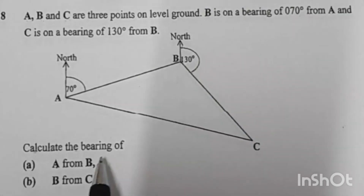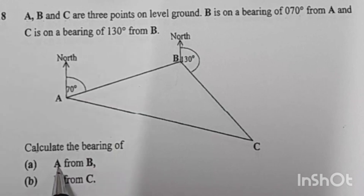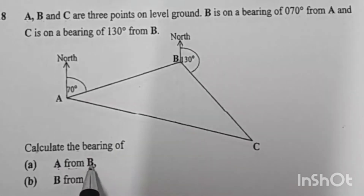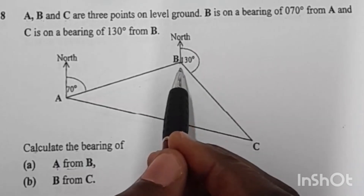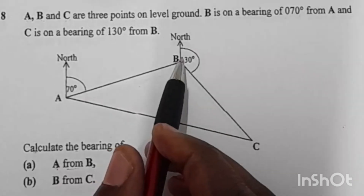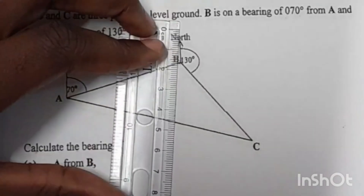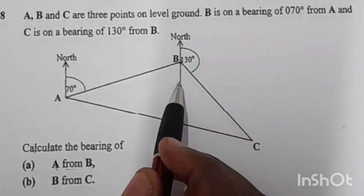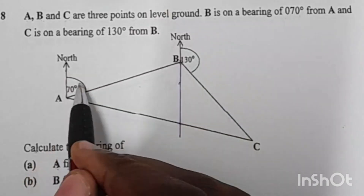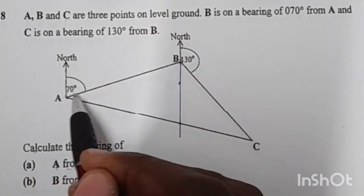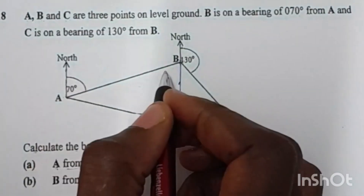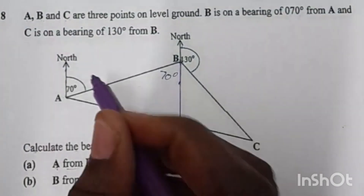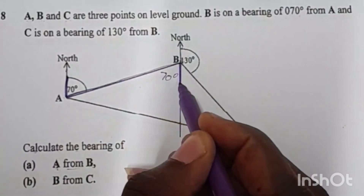Coming back to our question, they want us to find the bearing of A from B, meaning we are standing at B. Because we are standing at B, we draw a north at B. Since the north is already drawn at B, we extend it. This north and this north are parallel lines with a transversal, so this angle here is going to be 70 degrees as well — these are alternate angles, and alternate angles are equal.